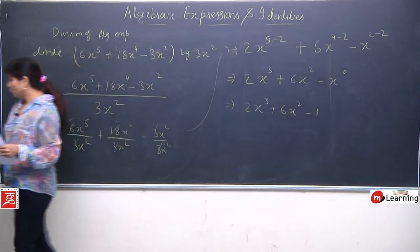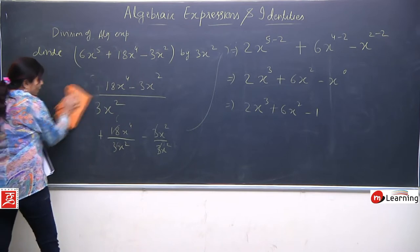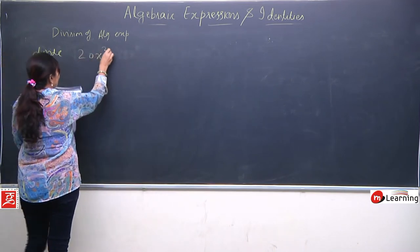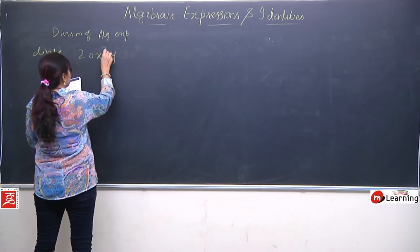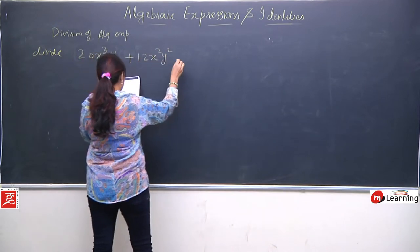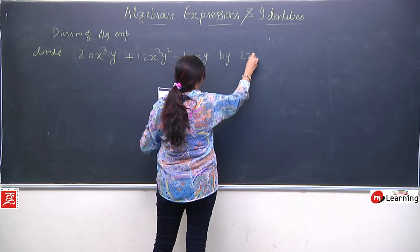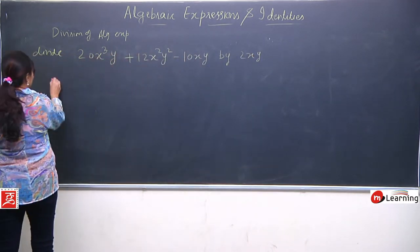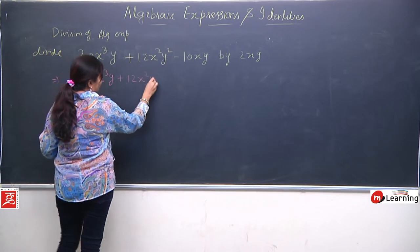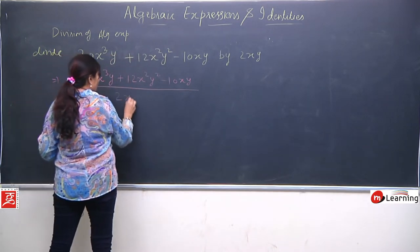Bahut simple hai divide karna. Bas aapko dhyaan rakhna hai ki separation karna aana chahiye. Ek aur practice question lein jisse aapko clear ho jaaye ki separation humein kaise karni hai. Another one is: 20x³y + 12x²y² - 10xy divided by 2xy. Sabse pehle question ko division ke form mein likhein.